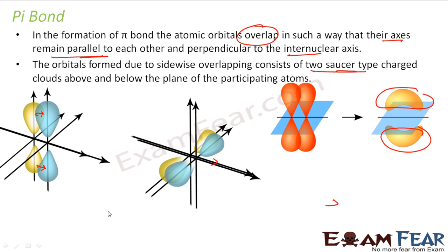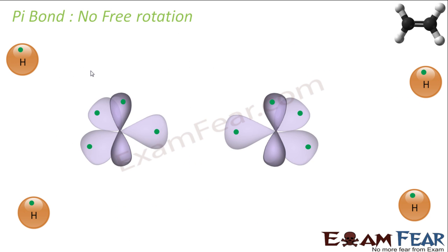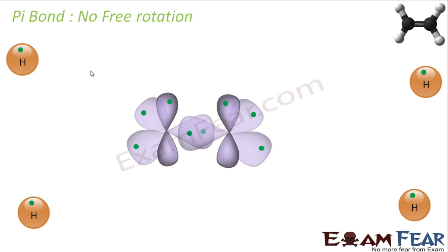So we have sideways overlapping. In the earlier case we had two orbitals overlapping head to head — that was sigma bond. In this case the two orbitals overlap side to side — this is pi bond. Pi bond is a weaker bond because the overlap extent is a little less. This is sigma bond, denoted by the symbol sigma, and this is pi bond, denoted by the symbol pi.